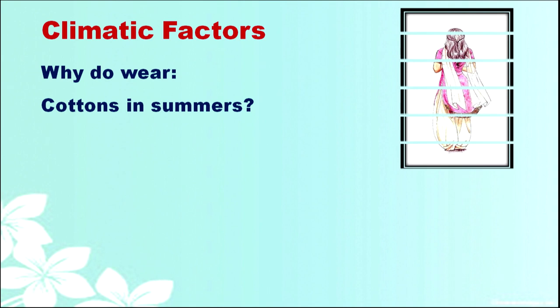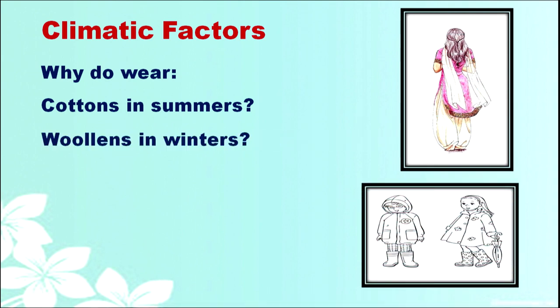Why do we wear cotton during summers or woolens during winters? People living in hills have a different set of clothing than people living in plains, and people in deserts have an entirely different set. We choose cotton for summers because of its properties as a fibre — it has good wicking quality and is highly absorbent, taking away perspiration from our body, and it is also a good conductor of heat.